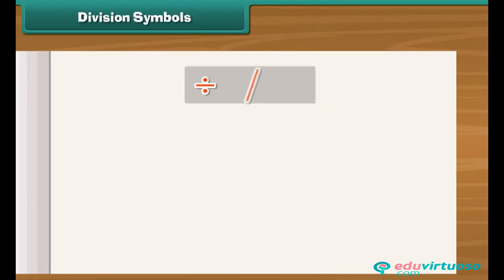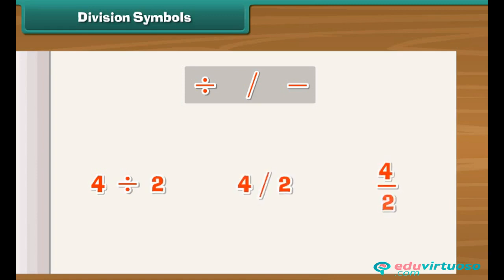Division symbols. Look at these symbols — these are division symbols. We use these symbols to indicate a division operation. For example, four divided by two can be written as four divided by two, or four by two, or four upon two.